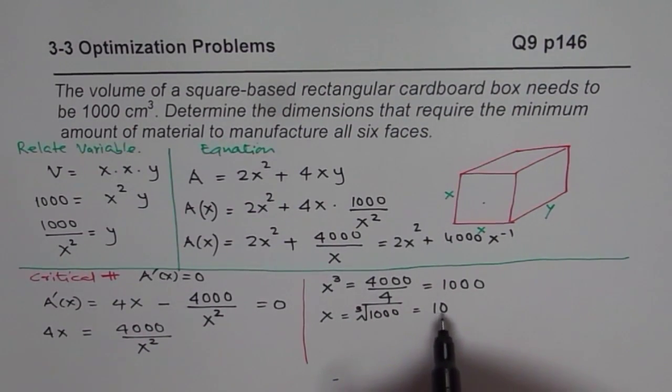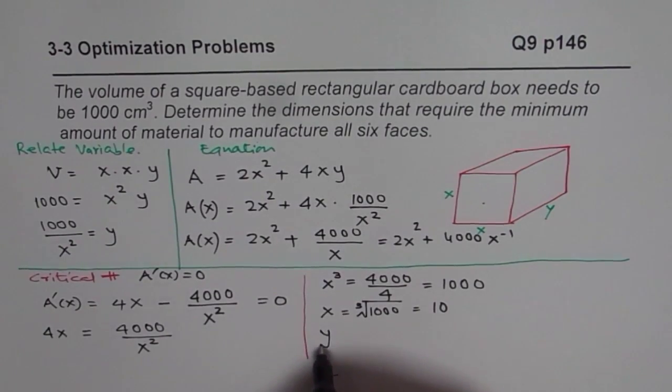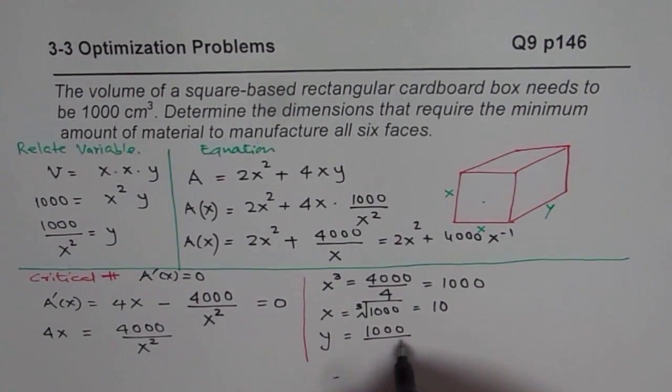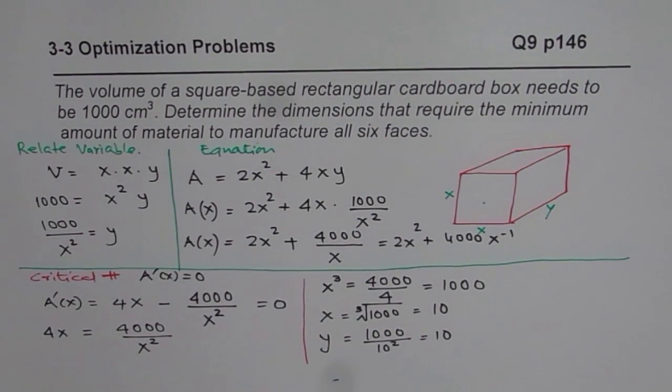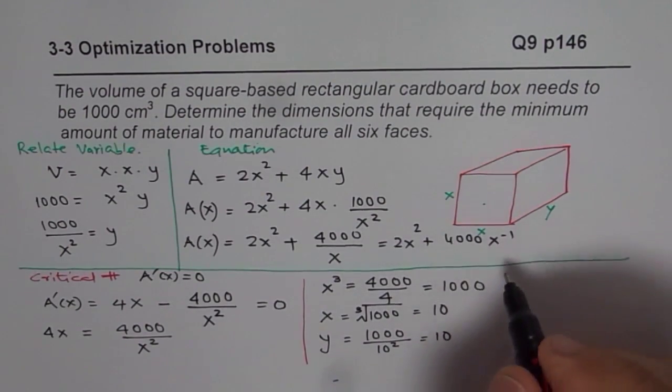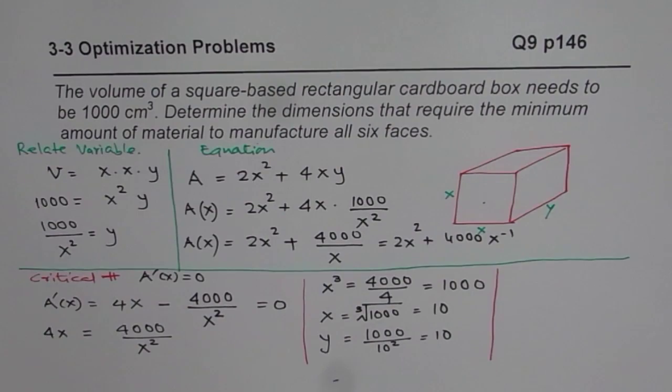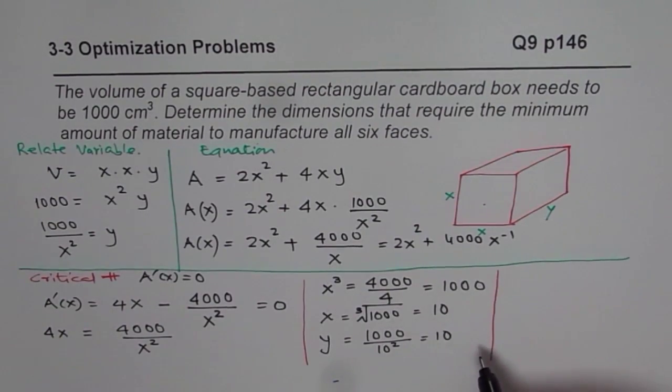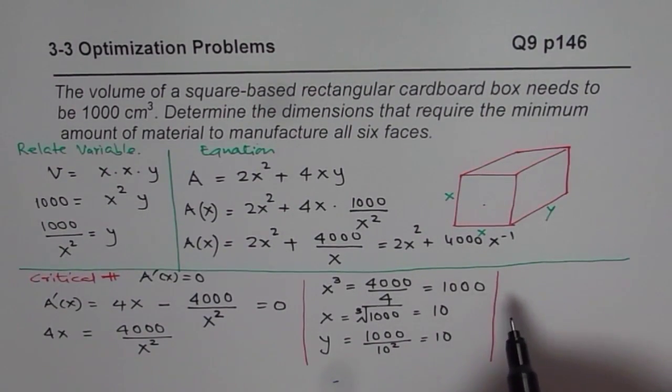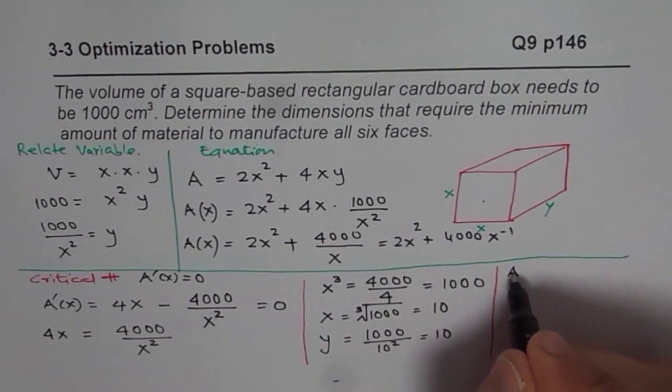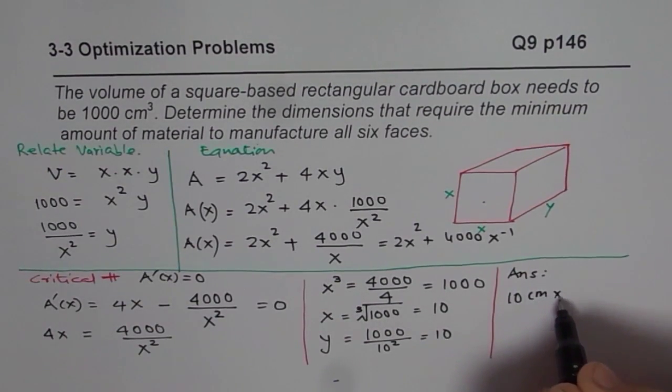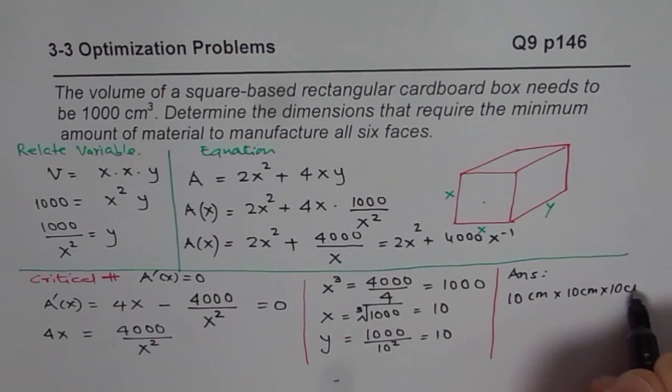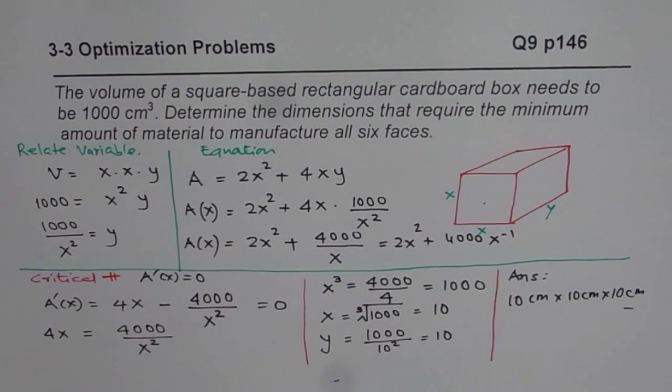Once we know what x is, we can find y. Y will be equals to 1000 divided by 10², which is also 10. So in this particular case, for minimum area, what we get is basically a cube. Always, that is the kind of expression which you will get when we consider all the surfaces. So we get our answer, and that is the dimension should be 10 centimeters by 10 centimeters by 10 centimeters. That is how we should be solving such questions.